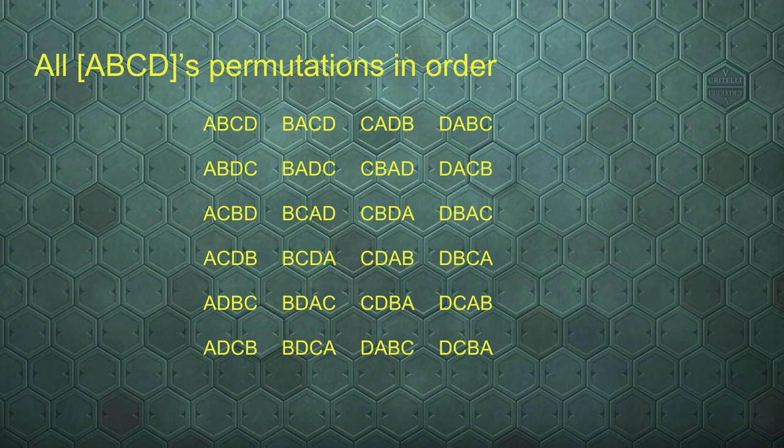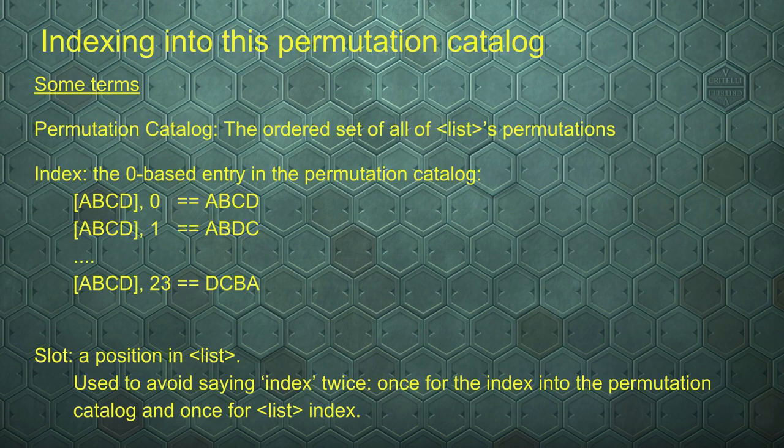This is the exhaustive list of all permutations ordered, with A, B, C, D being the first — or element 0 in this permutation catalog. A, B, D, C is the second; A, C, B, D the third; and so on, all the way up to D, C, B, A.